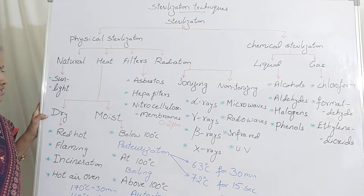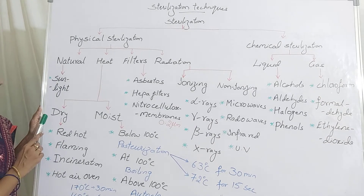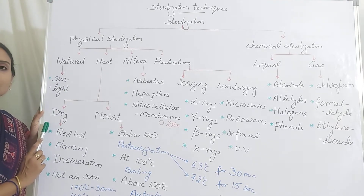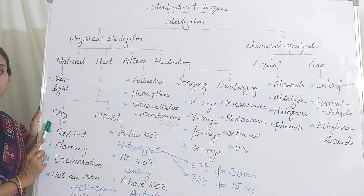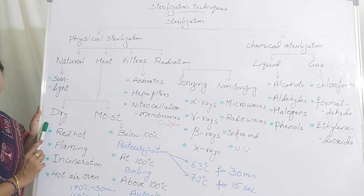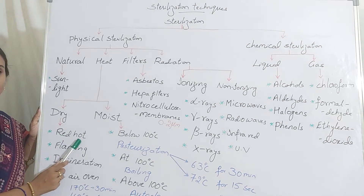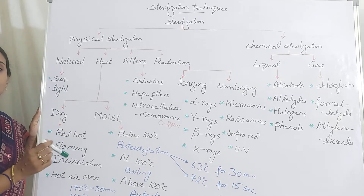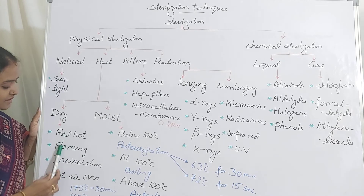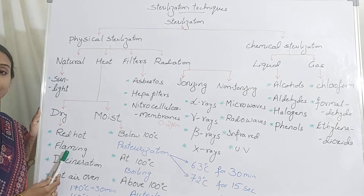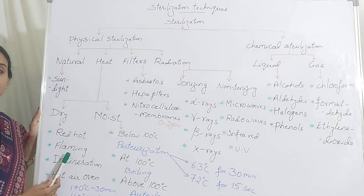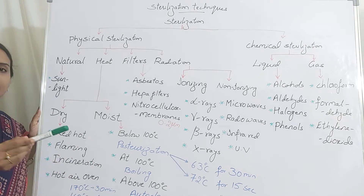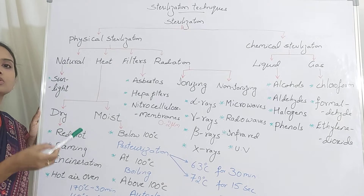In dry heat sterilization, we mostly use this technique to make instruments and glassware free from contamination. The red hot technique involves burning inoculation loops to red hot in a direct flame. To avoid damage, you can simply flame it — passing it over the flame.